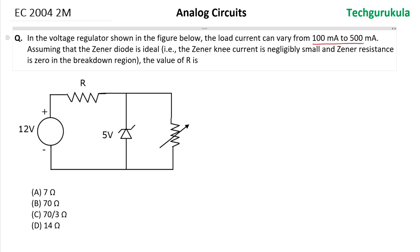So this is basically the load regulation part of the regulator we studied. Assuming that the Zener diode is ideal, they have given that knee current is negligibly small and Zener resistance is 0 in the breakdown region.